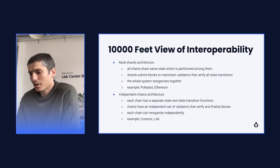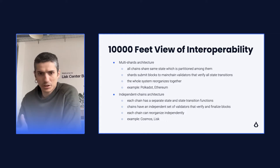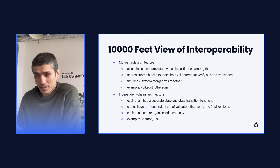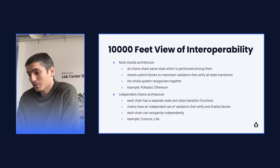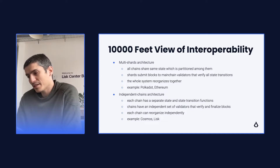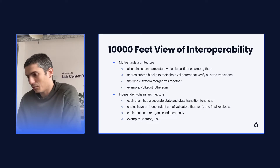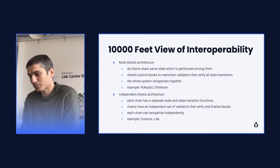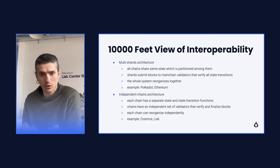In a multishard architecture, all chains that are connected with each other share the same state, which is partitioned among them. Usually these chains are called shards, and these shards submit blocks to main chain validators that verify all state transitions from the shards' blocks. This means that when one of the shards wants to reorganize, or in general when the system needs to reorganize, everything has to reorganize together. Two notable examples with some differences between them are Polkadot and Ethereum.